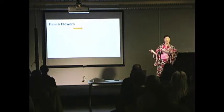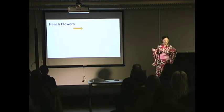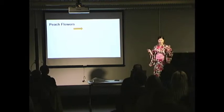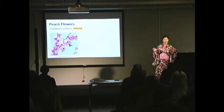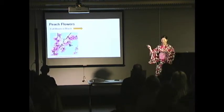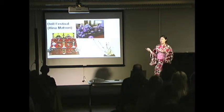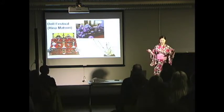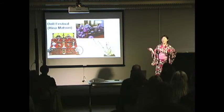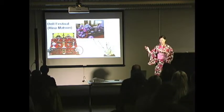The next example is peach flowers. Peach flowers are arranged for a doll festival, which is a girls' celebration on March 3rd. Peach flowers are in full bloom in March, so Japanese people think peach flowers are wonderful flowers to celebrate girls and welcome spring. That's why peach flowers are arranged for a doll festival, and we can enjoy Japanese dolls and peach flowers for the festival.